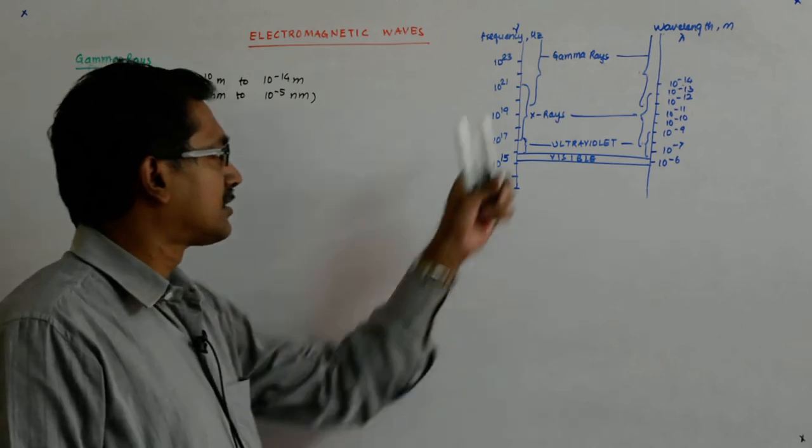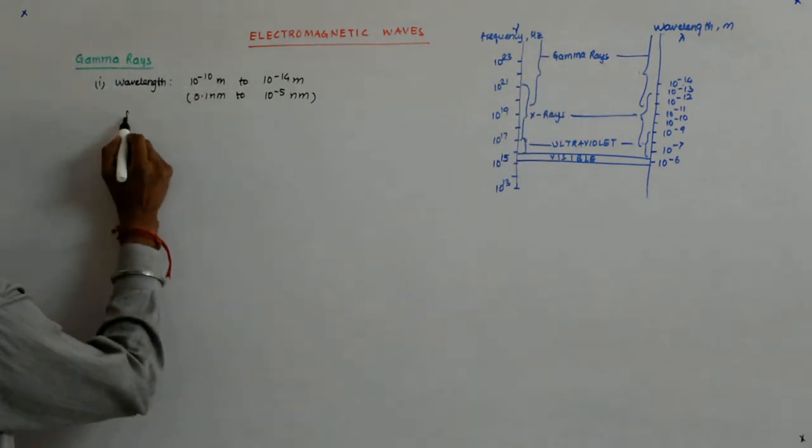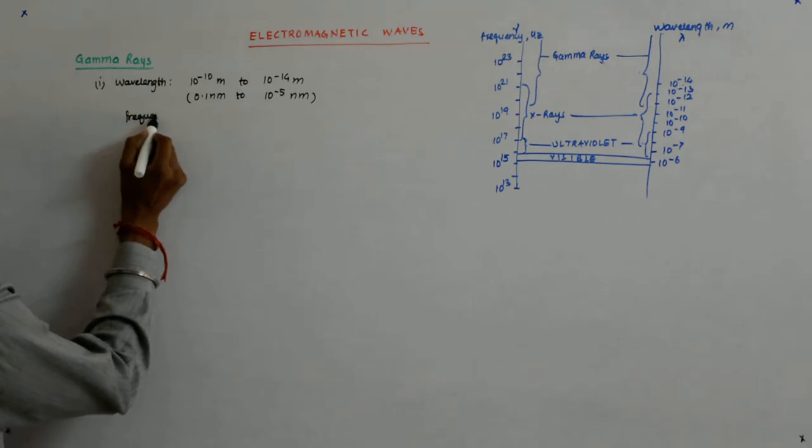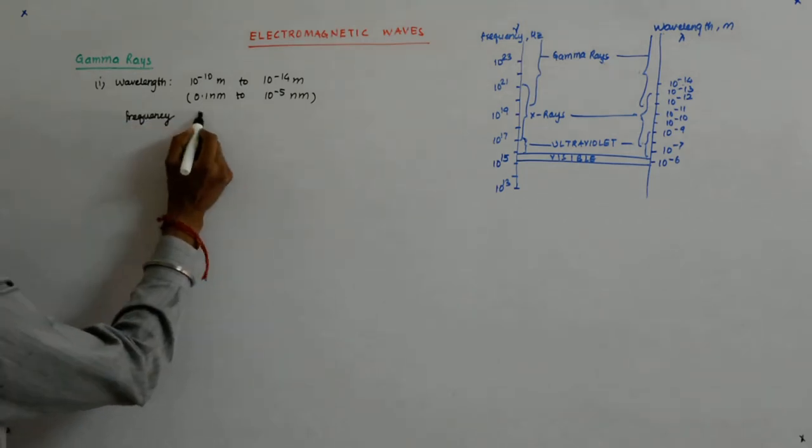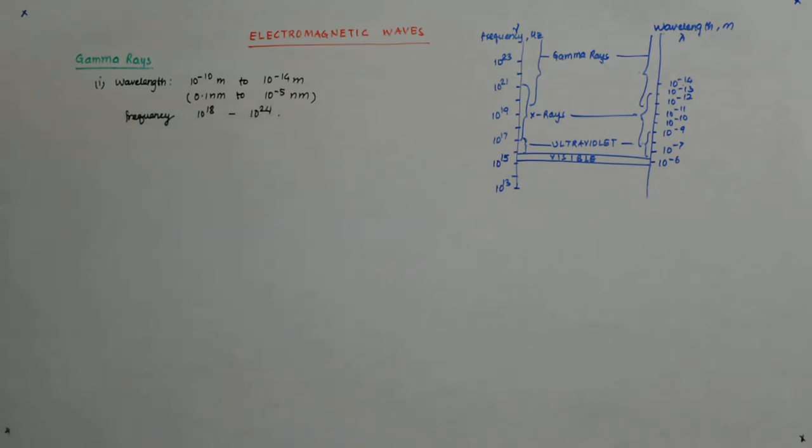Very small wavelength resulting in extremely high frequencies. So frequency kind of 10 to the power 18 to say 10 to the power 24 hertz.